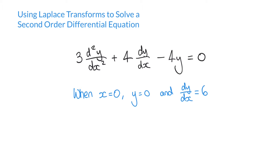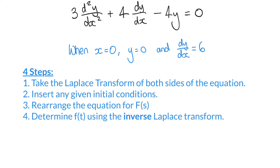We have a function y in terms of x — as x changes, y changes. In previous examples we've handled functions with respect to t in the time domain, so we might have seen dy/dt. Here we have dy/dx and d²y/dx². Don't be alarmed — the method is exactly the same. Rather than t, we see x instead, but that doesn't change our process. We're going to follow the same four steps from a previous video to solve this second-order differential equation.